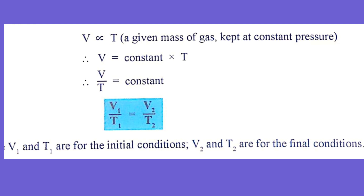V varies as T. The mathematical expression is V = constant × T, for a given mass of gas at constant pressure.